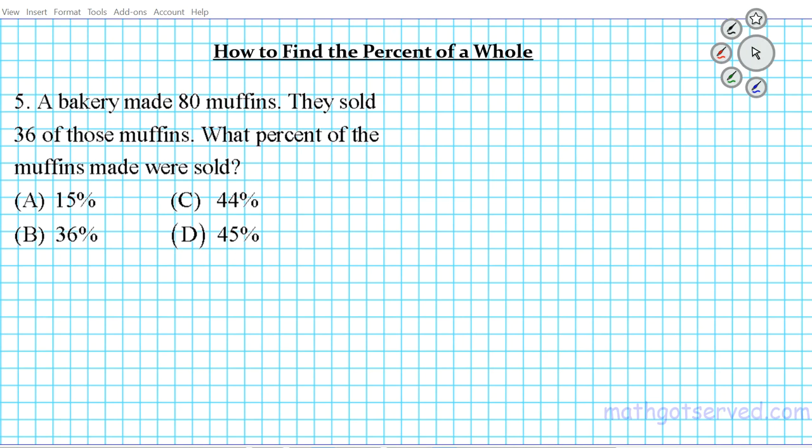So the part is 36 and the whole is 80. 36 out of the 80 were sold. So what is that in percent format? That's the question. Let's take a look at the formula. Another formula that you can access on our website, mathgotserved.com.